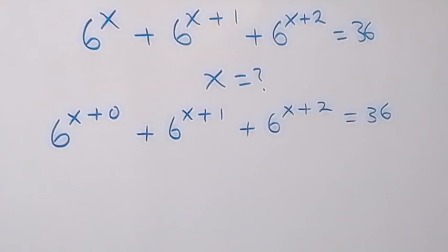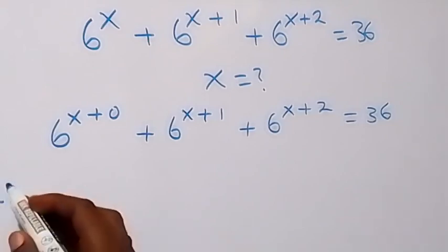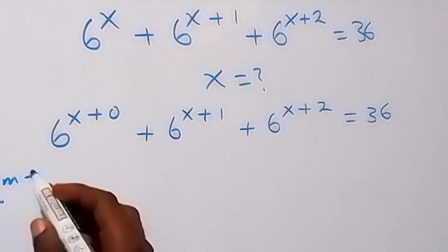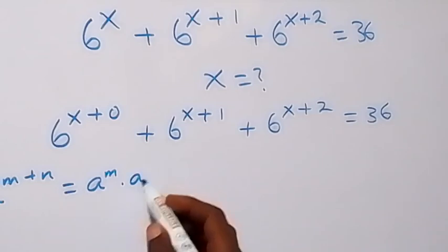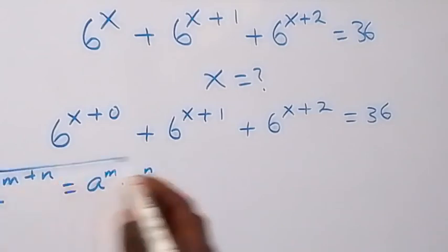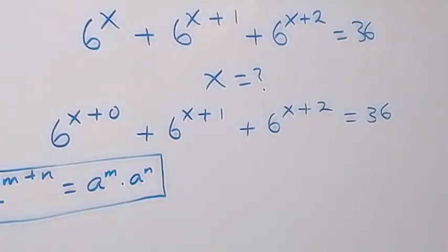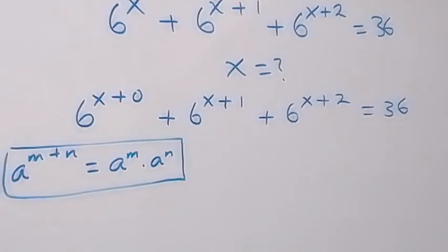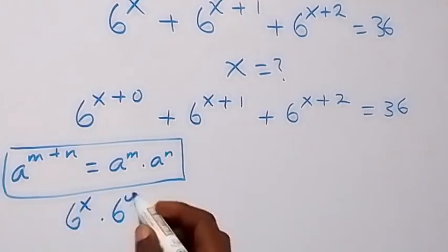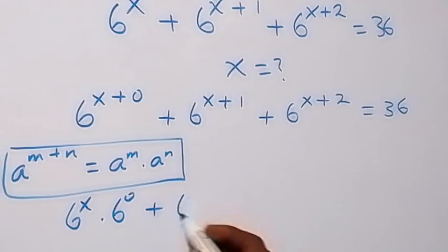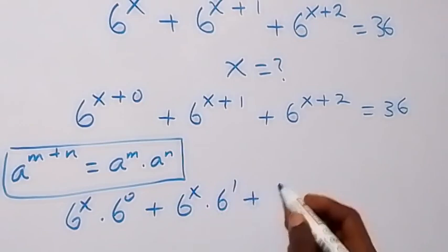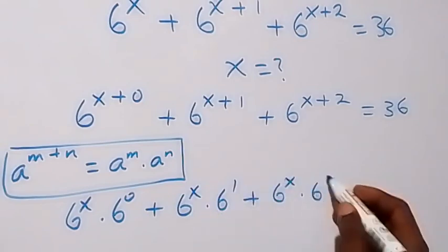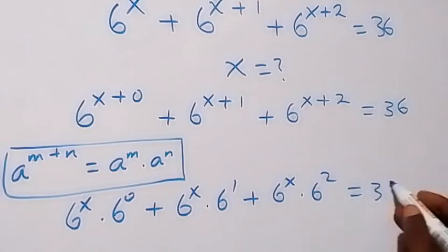This follows from the law of indices, where we have a raised to power n plus n, and this can be written as a raised to power n times a raised to power n. Applying this here gives us 6 raised to power x times 6 raised to power 0, plus 6 raised to power x times 6 raised to power 1, plus 6 raised to power x times 6 raised to power 2, equals 36.